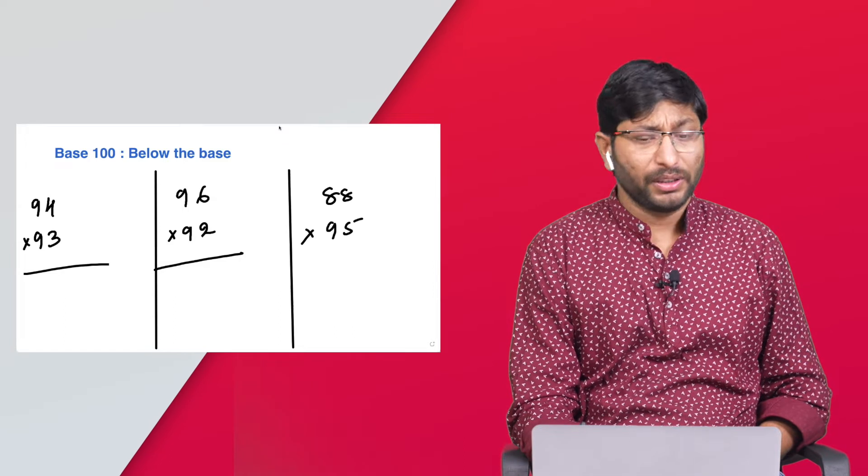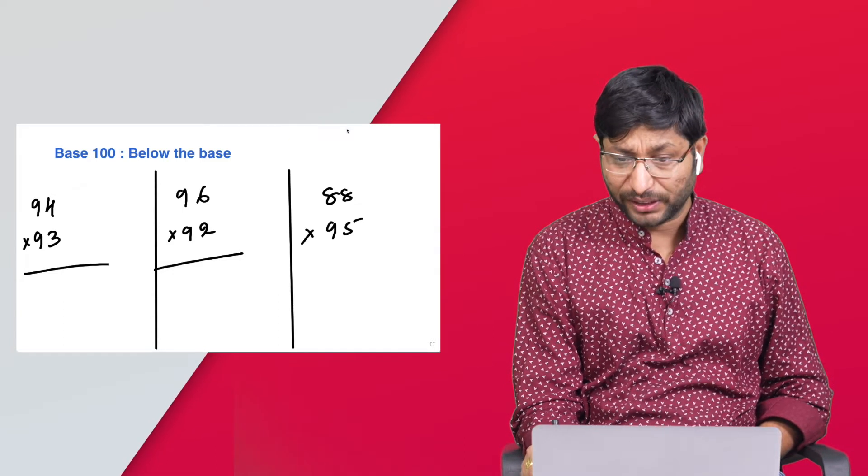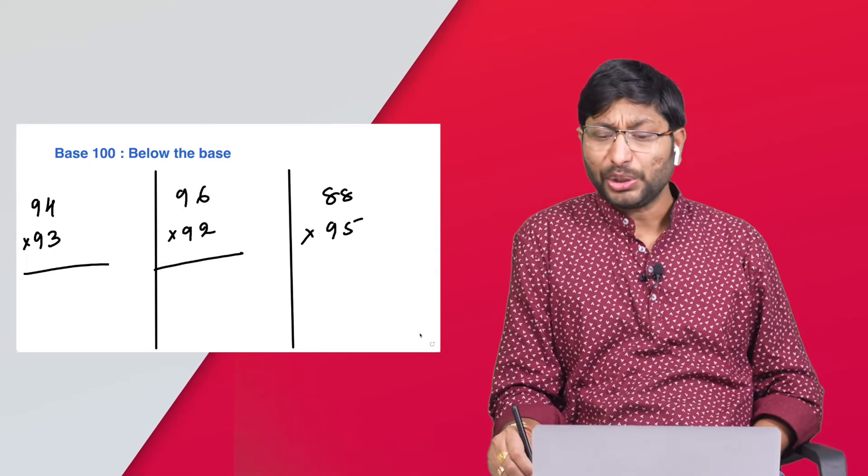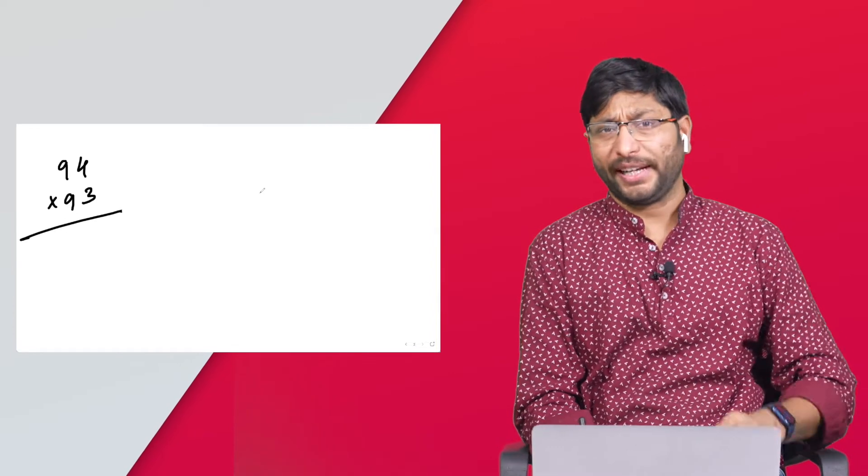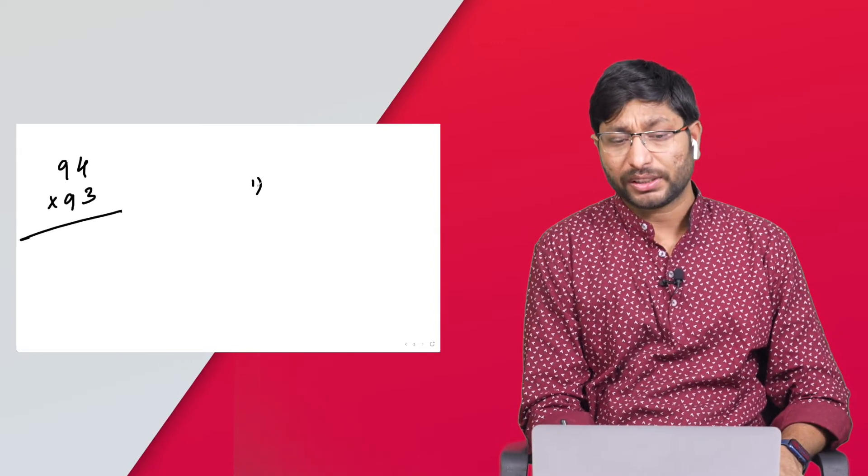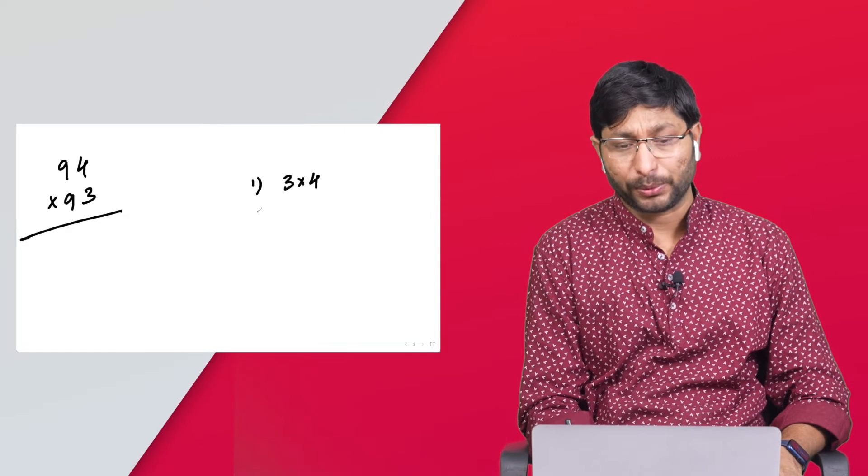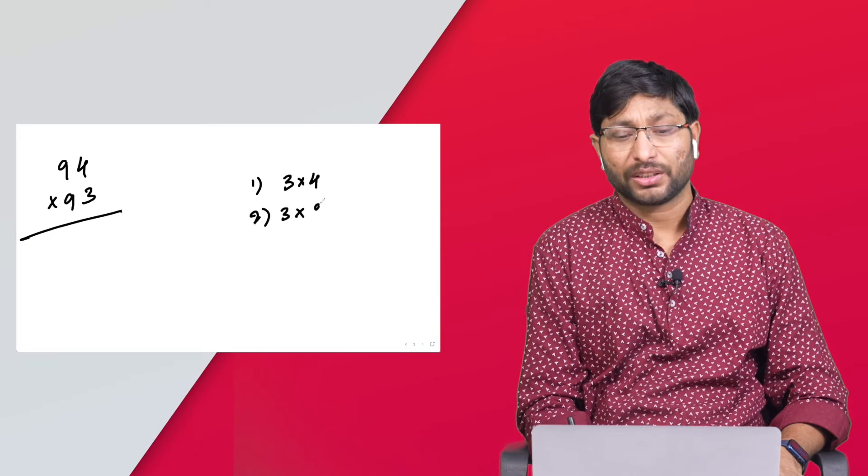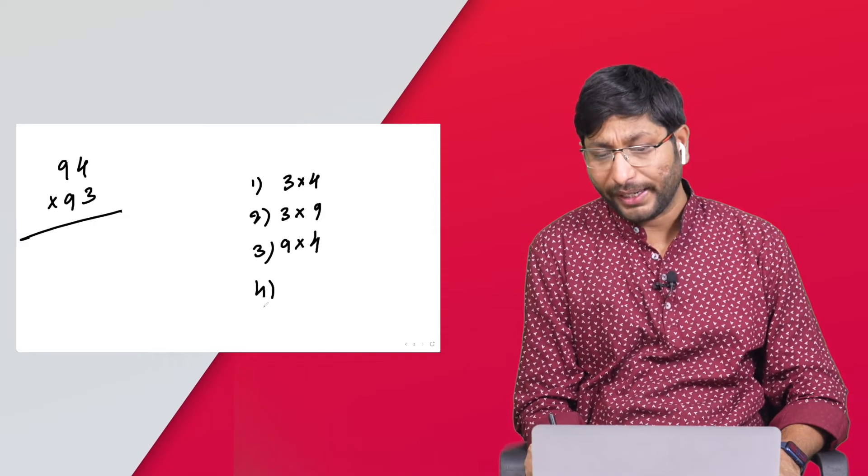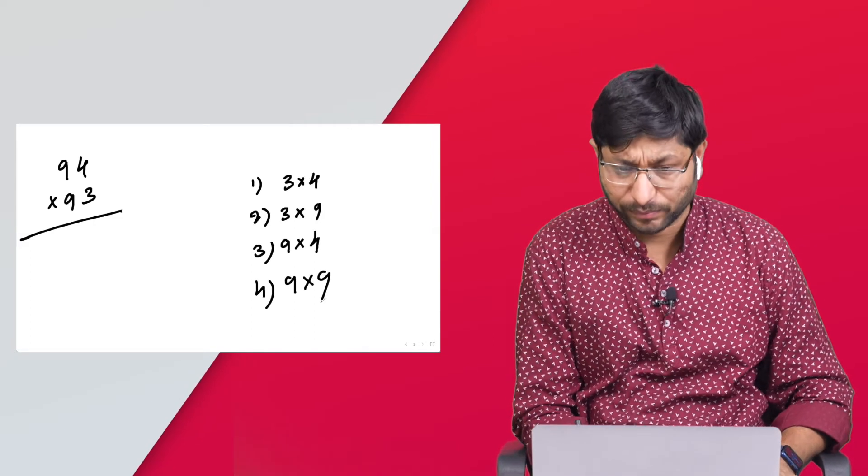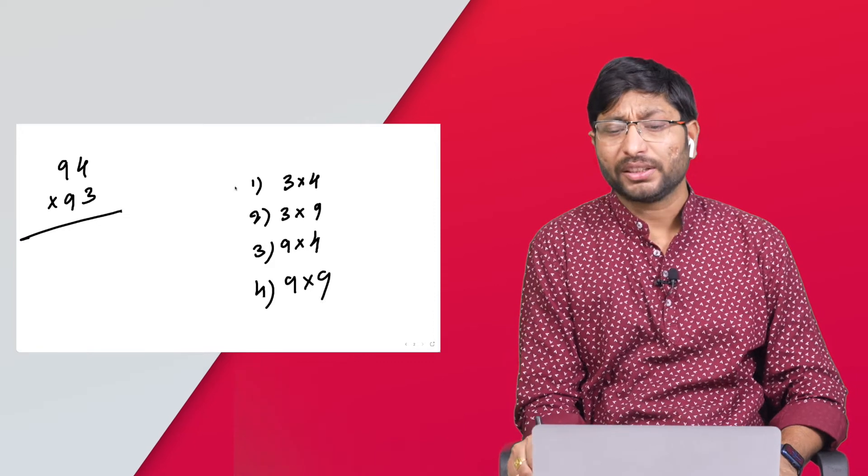The problems look simple. As you watched the previous video, I'll go a little faster in this video. The problems look very simple, but if you give the same problem to any student, let's say 94 multiply with 93, how many steps will the student take care of it?